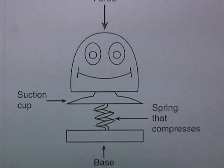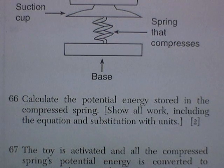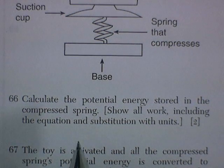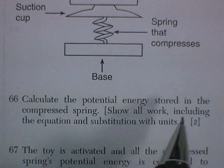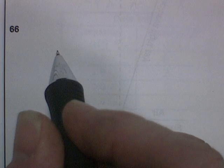All right. So let's do this. Calculate the potential energy stored in the compressed spring. Show all the work, including the equation and substitution with units. So 66. First thing you want to do is let's write down everything we know.